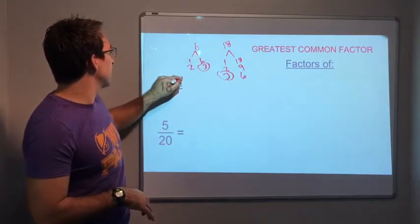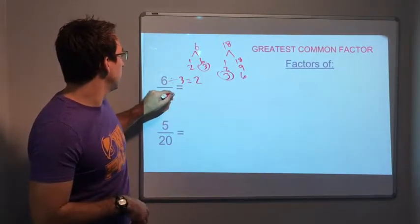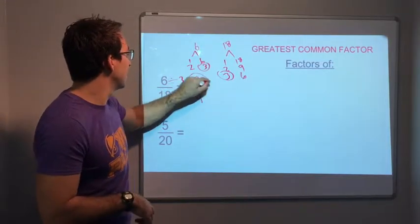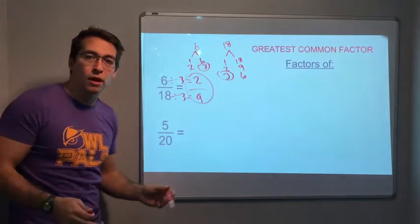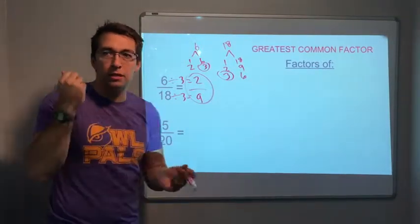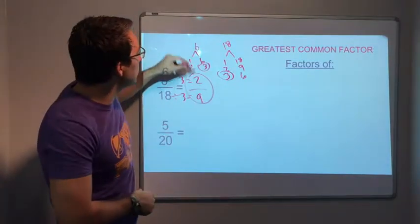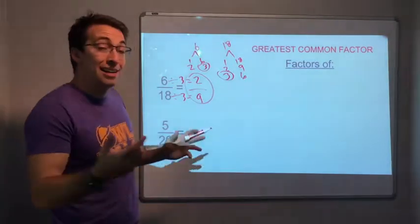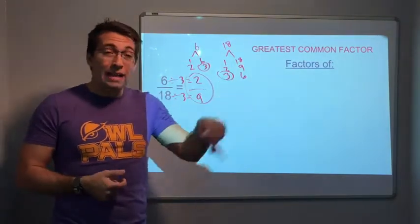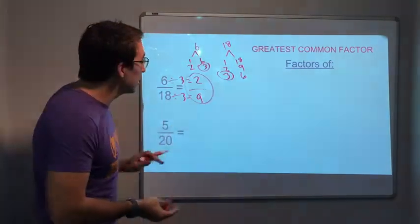6 divided by 3 equals 2. 18 divided by 3 equals 6. 2/9. Your GCF, you must know it. You must be able to find it. Use these charts and these columns. Be organized and do lots of scratch work. You've got to write down lots of things when you're dealing with fractions.